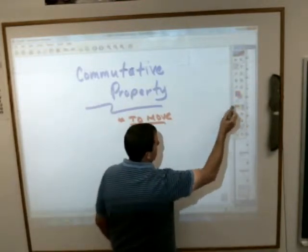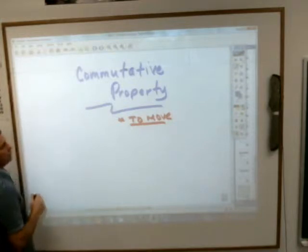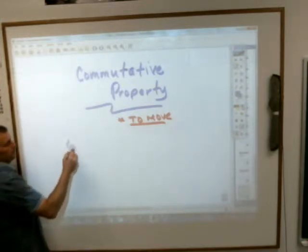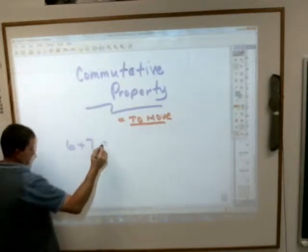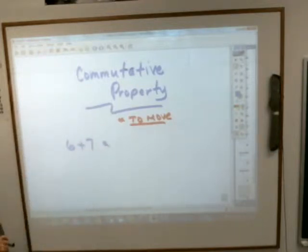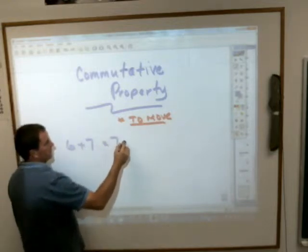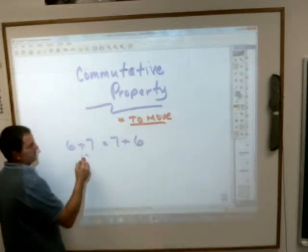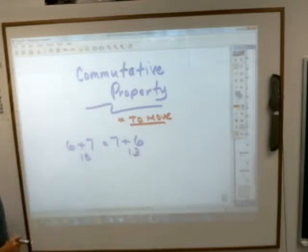Okay, and the commutative property says that with addition, for instance, 6 plus 7, you would get the same answer if you moved those numbers around. In other words, 6 plus 7 is the same thing as 7 plus 6. You still get 13 from both of those.